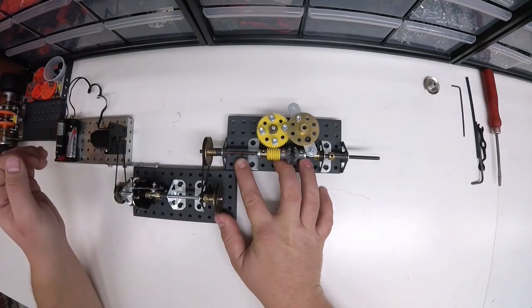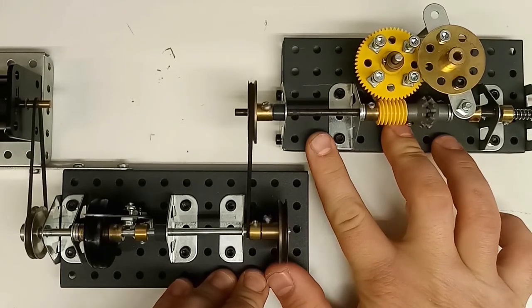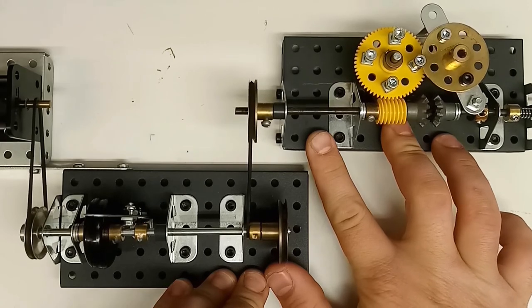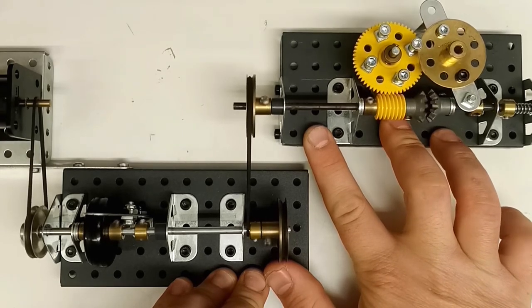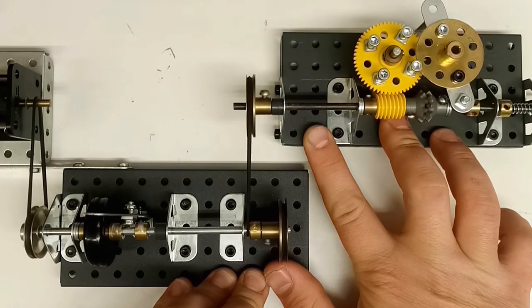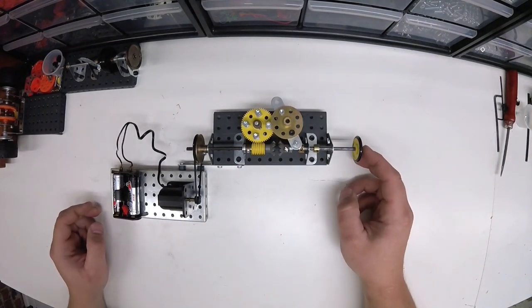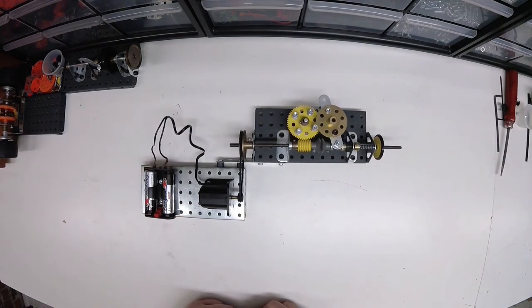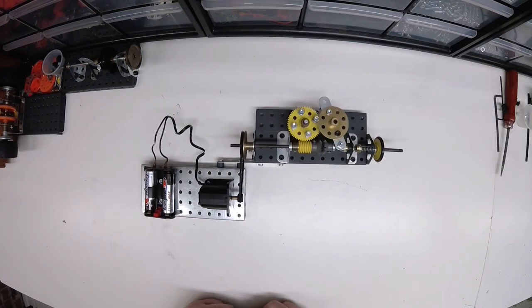And here's the model with the dog clutch removed, just a motor straight to the intermittent drive. And here it is working wonderfully. I really enjoyed making this model, and if you enjoyed watching please leave a comment and be sure to subscribe.